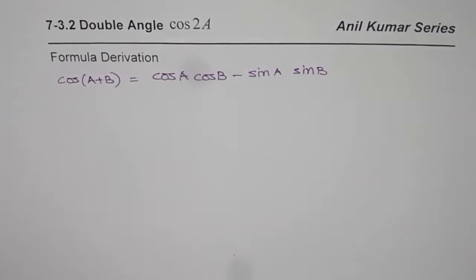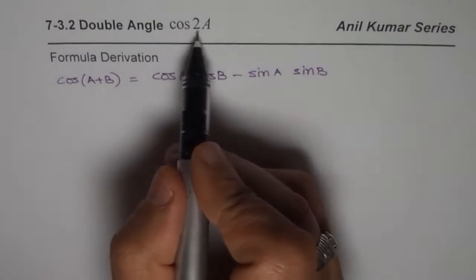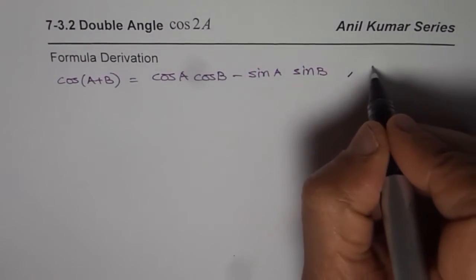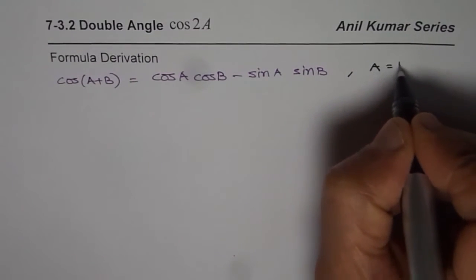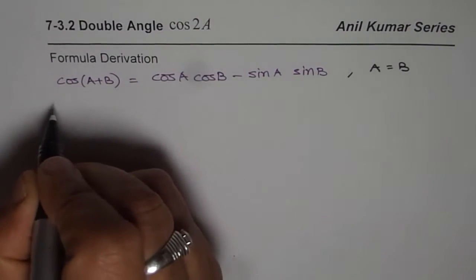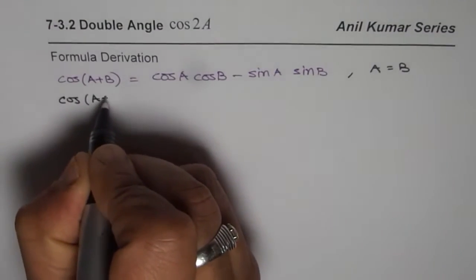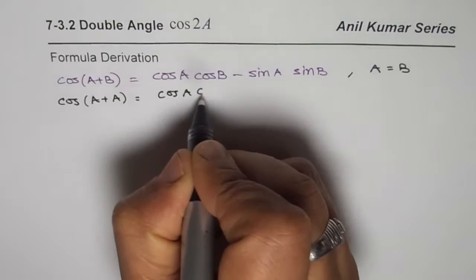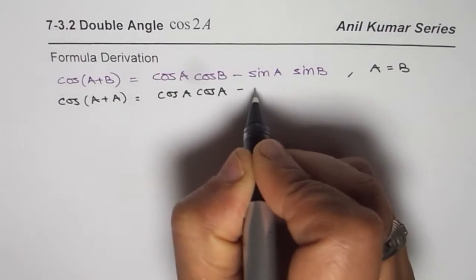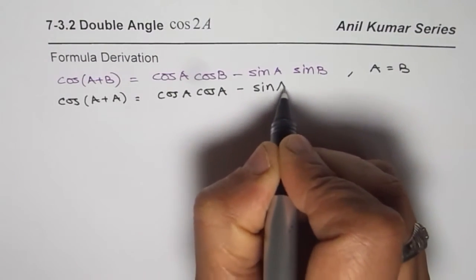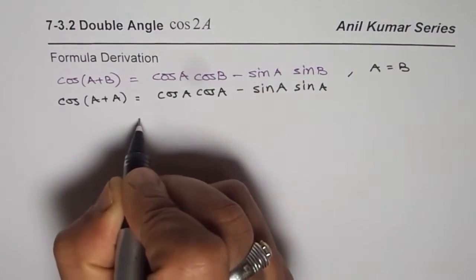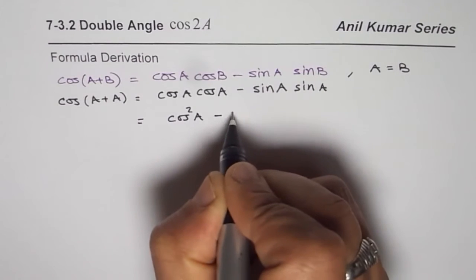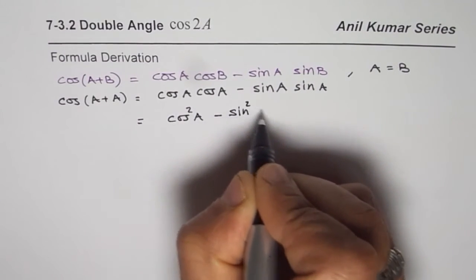Since we need to find the formula for cos 2A, that means we can write B as A. So if I write B as A, or if I say A equals to B, then we can write this as cos of A plus A equals to cos of A cos of A minus sin of A sin of A, and that gives us cos square A minus sin square A.